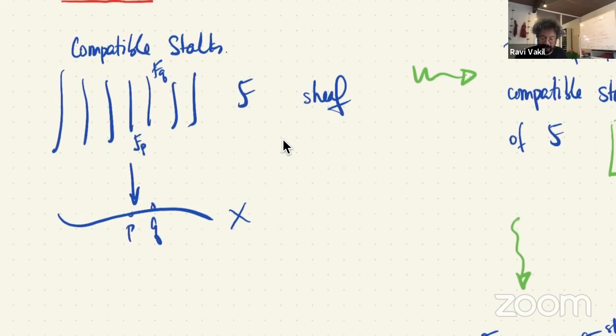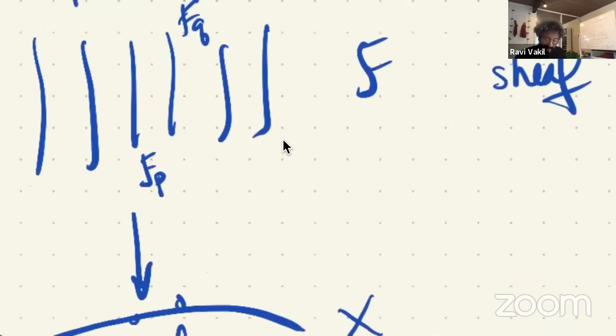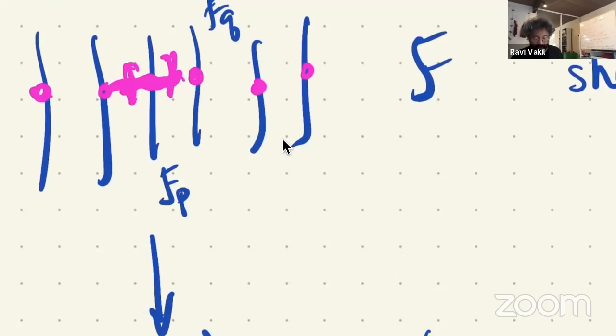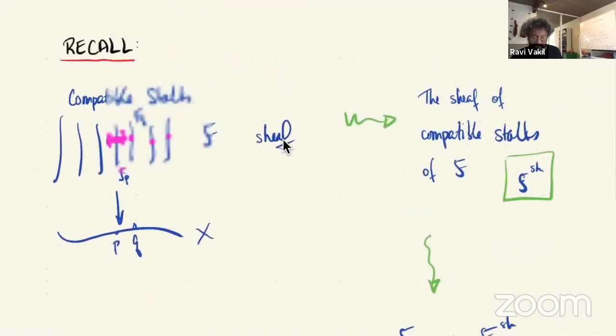The way to picture compatible stalks or the espace étalé is: you want to pick a germ of a section of F at every point. At each point, a germ means you have data of open sets up to equivalence and sections there — it should extend to an honest section over some open set. You want an honest open set where all the germs of F agree with all the germs nearby.